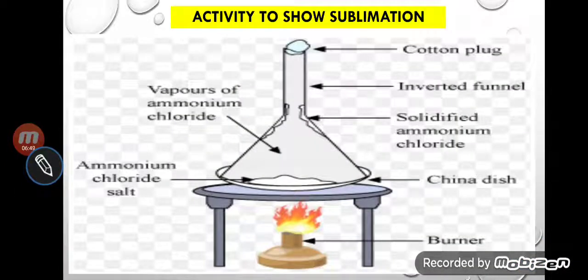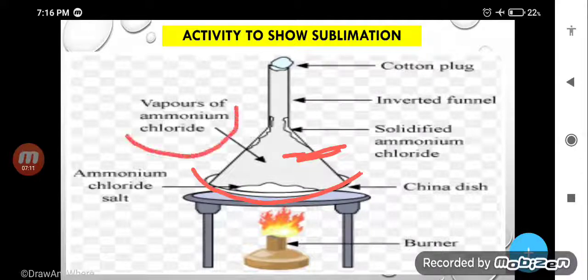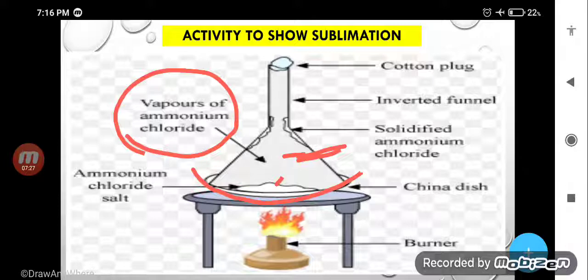Here I am going to show the sublimation process through an activity. You can see there is a glass funnel kept upside down, and here is a pot called a china dish. In the china dish one thing is kept — the sublimation substance, which is ammonium chloride. Once we light the burner, after getting heated, ammonium chloride starts changing into vapor, and the vapor collects and goes upward.